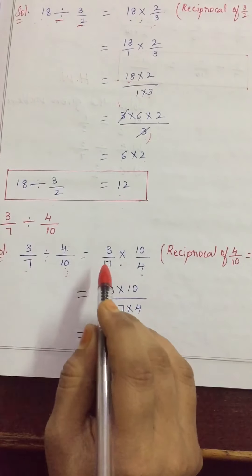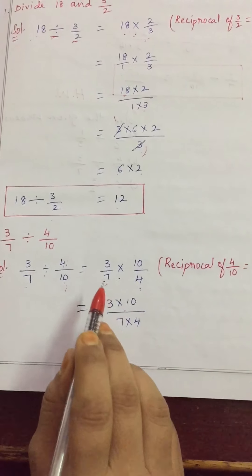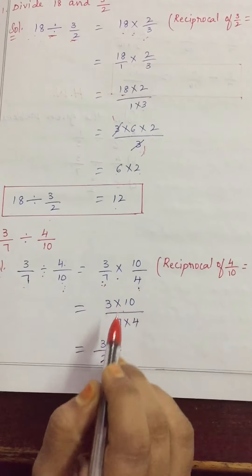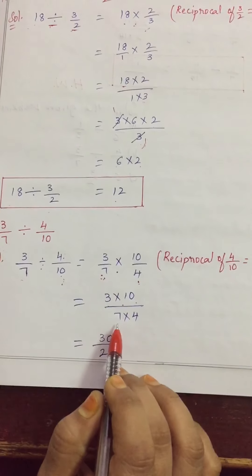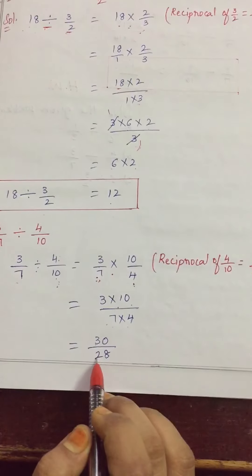Now, we have to multiply 3 by 7 into 10 by 4. Numerator into numerator we need to multiply, denominator into denominator. 3 into 10 whole divided by 7 into 4. 3 times 10 is 30, 7 times 4 is 28.